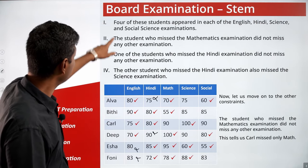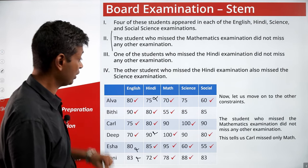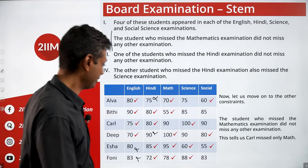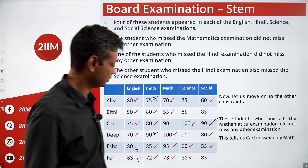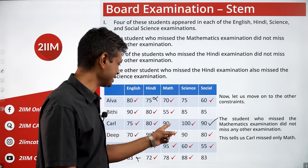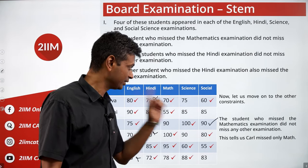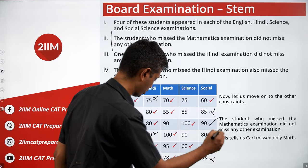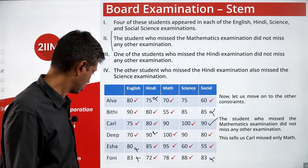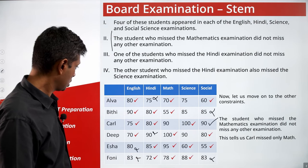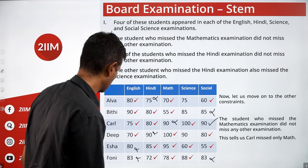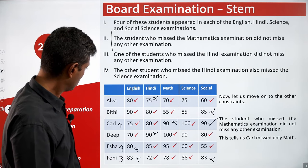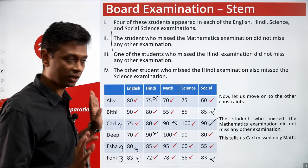The student who missed the Mathematics exam did not miss any other exam — that is Karl. Karl missed only Math, so Karl attended everything else, including Social. Average of 100 and 80 is 90, confirming Karl attended Social. So four have taken Social. Phony attended only three exams. Isha attended four. Karl attended four.